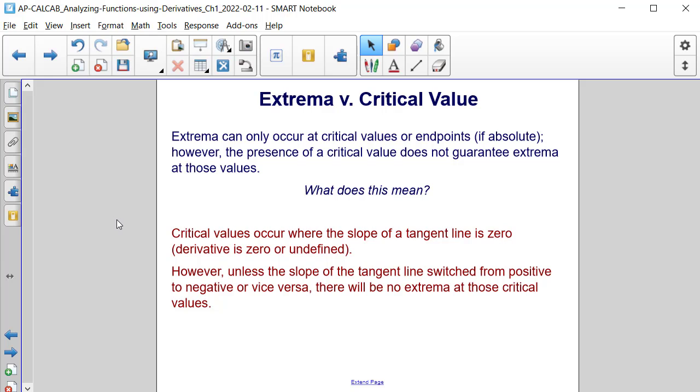It means that critical values occur where the slope of the tangent line is 0. In other words, the derivative is 0 or undefined. However, unless the slope of the tangent line switched from positive to negative or vice versa, there will be no extrema at those critical values.